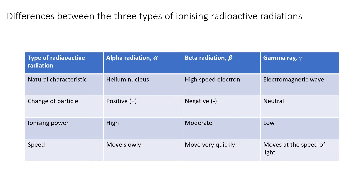Now let's look at the differences between the three types of ionizing radioactive radiation. We can see from the table below that for natural characteristics, alpha is a helium nucleus. Helium nucleus contains two protons and two neutrons. Beta radiation is a high-speed electron, and gamma ray is an electromagnetic wave. For the charge of particle, alpha has a positive charge, while beta has a negative charge, and gamma ray is neutral.